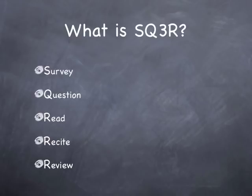What is SQ3R? It is a five-step process designed for a student to learn information much more carefully and completely. The five steps are: survey, question, read, recite, and review. The full textual reading is sandwiched between pre- and post-reading activities.